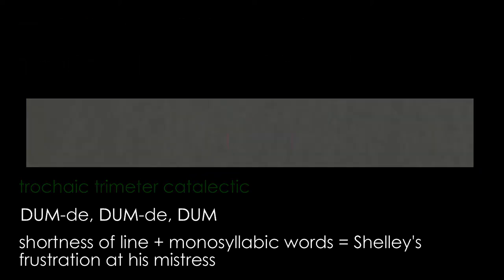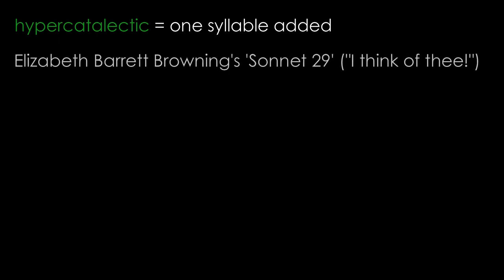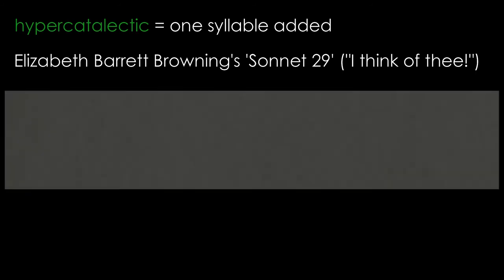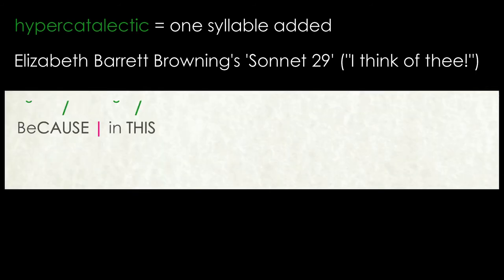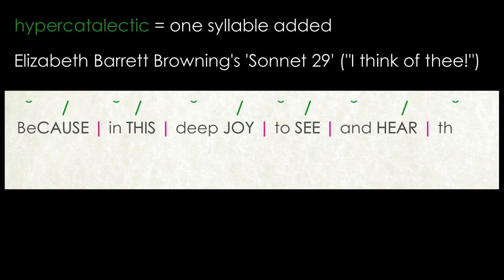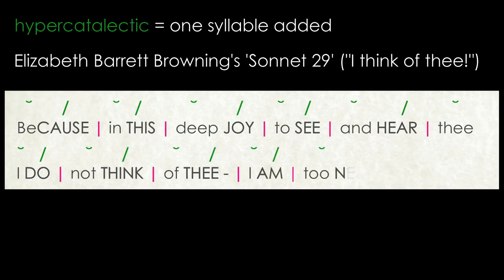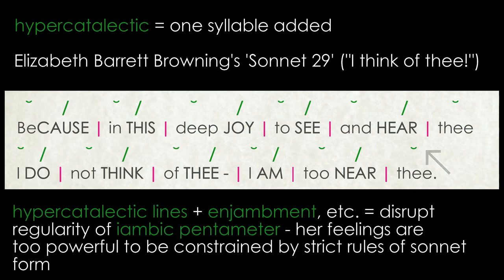When a syllable is added, the line is said to be hypercatalectic. A number of the lines in Elizabeth Barrett Browning's sonnet 'I Think of Thee' are hypercatalectic: 'because in this deep joy to see and hear thee' and 'I do not think of thee, I am too near thee.' These, in conjunction with other techniques such as enjambment, disrupt the regularity of the iambic pentameter and help to convey the idea of her feelings being so powerful that they cannot be contained within the strict rules of the sonnet form.